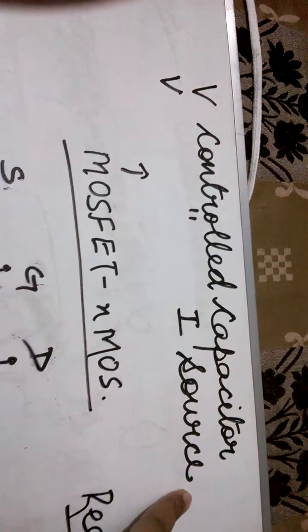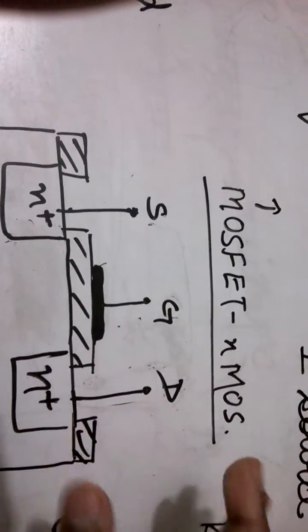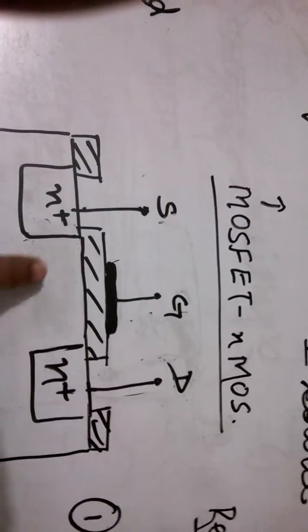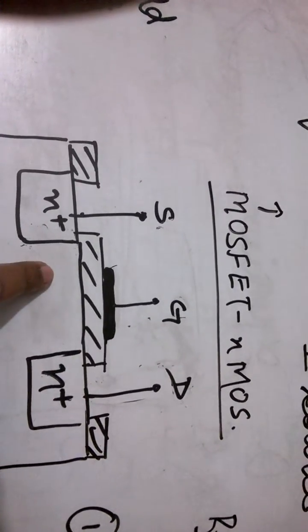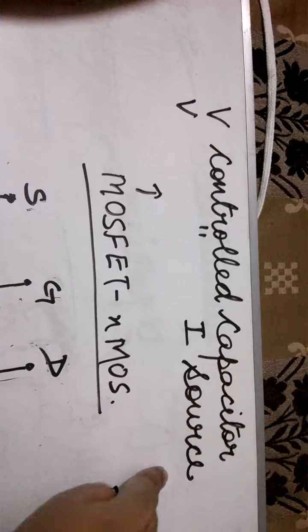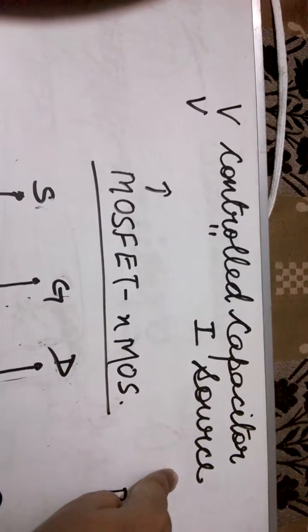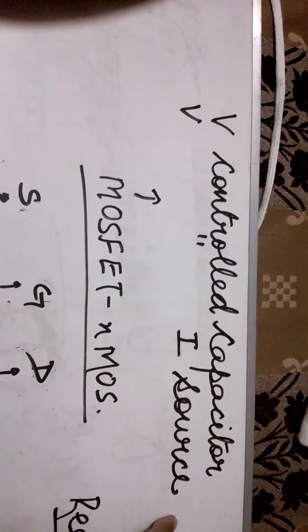Second is the voltage controlled current source. See this structure is taking VGS as the input and depending upon the gate voltage it is providing this current, that is the drain current. This is your output current. So voltage controlled current source where input is a voltage and output is a current. So these two terms you must remember for the purpose of gate exam.